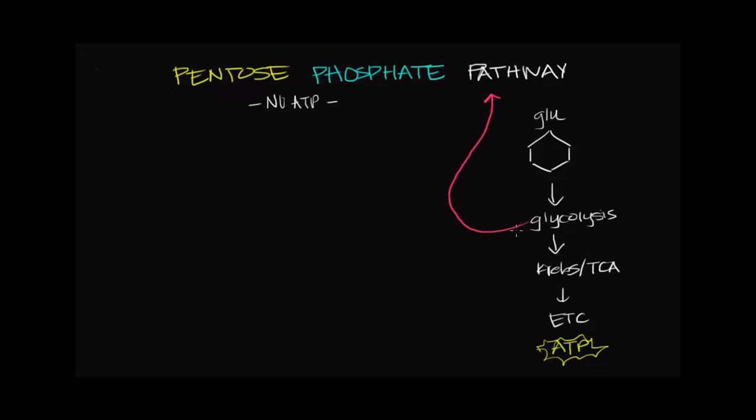So glucose continues to be broken down, but it continues to be broken down to produce different products than it would if it continued through glycolysis and Krebs and then to the electron transport chain.